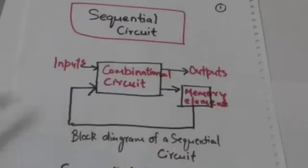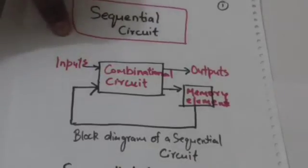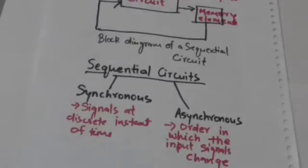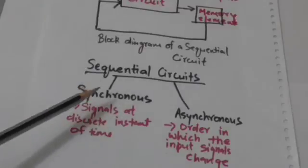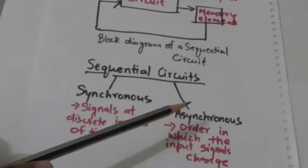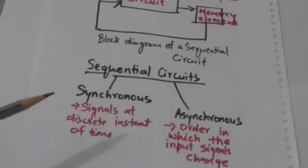Now there are two types of sequential circuits: synchronous sequential circuits and asynchronous sequential circuits. The behavior of synchronous sequential circuits is defined by signals at discrete instants of time.